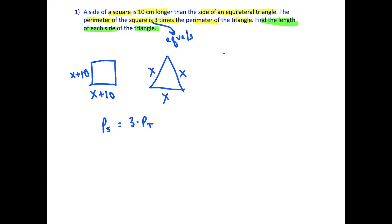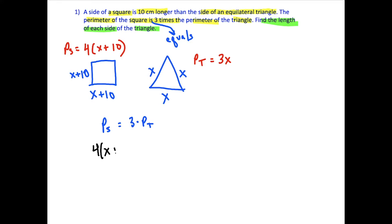So we set up expressions for each perimeter. The perimeter of the square: we add x plus 10 four times, or just multiply 4 times (x plus 10). For the perimeter of the triangle, we multiply one side by 3, giving us 3x. So the equation is: 4(x + 10) = 3 times the perimeter of the triangle, which is 3 times 3x — wait, the perimeter of the square equals 4(x + 10), and this is equal to three times 3x, which is 9x.